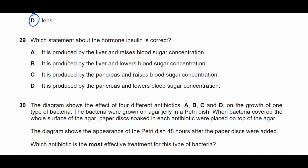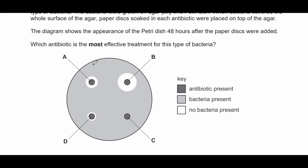Question twenty-nine: which statement about the hormone insulin is correct? Insulin reduces blood sugar concentration — it does not raise it. Insulin is produced by the pancreas, not the liver. Therefore the correct answer is D: it is produced by the pancreas and lowers blood sugar concentration.